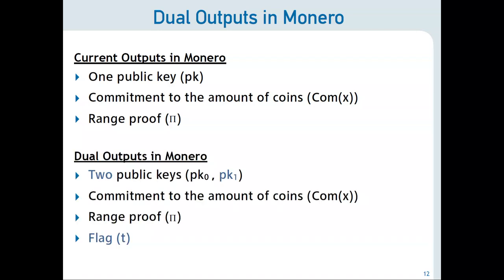What we are proposing is slightly modifying these outputs. I've highlighted in blue the additions we are proposing. Instead of having a single public key, now every output will have two: public key 0 and public key 1. We maintain exactly the commitment to the amount as it is today, and we maintain the range proof. This is a really good thing, because most of the scalability approaches and clever tricks can also be applied to this DLSAG project as well. But then we need an extra element called flag t, which determines whether we are going to use pk0 or pk1 in the output.